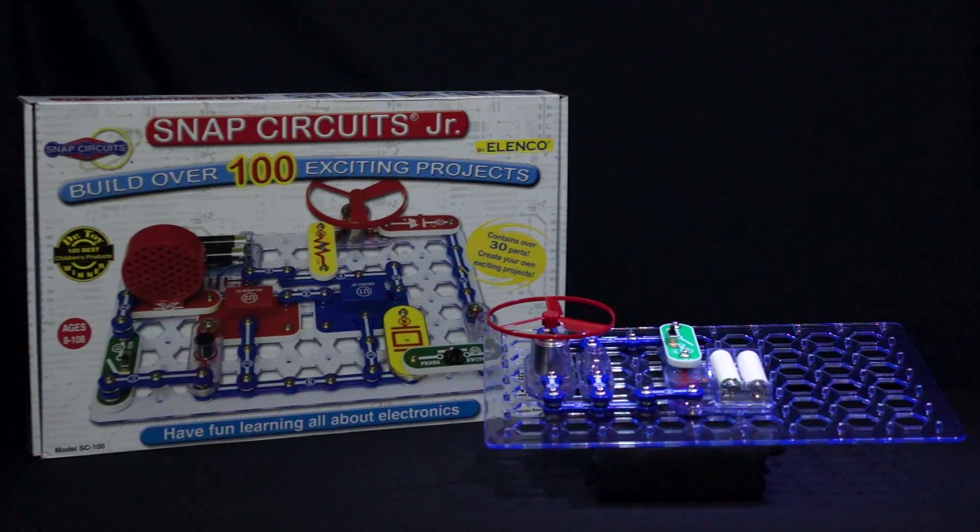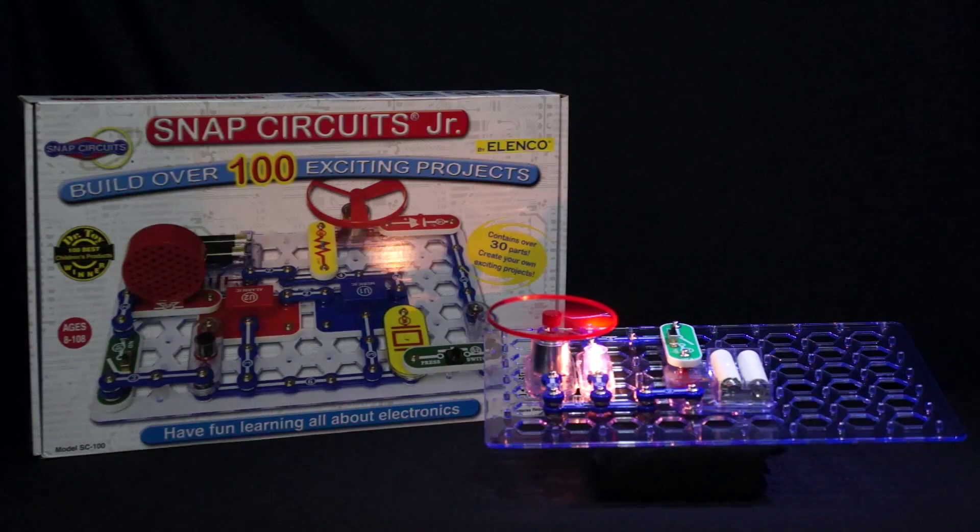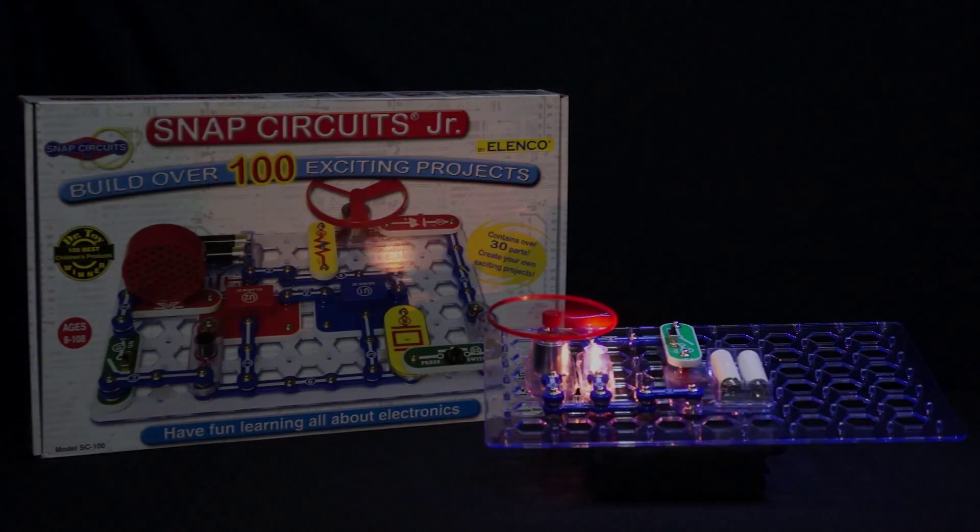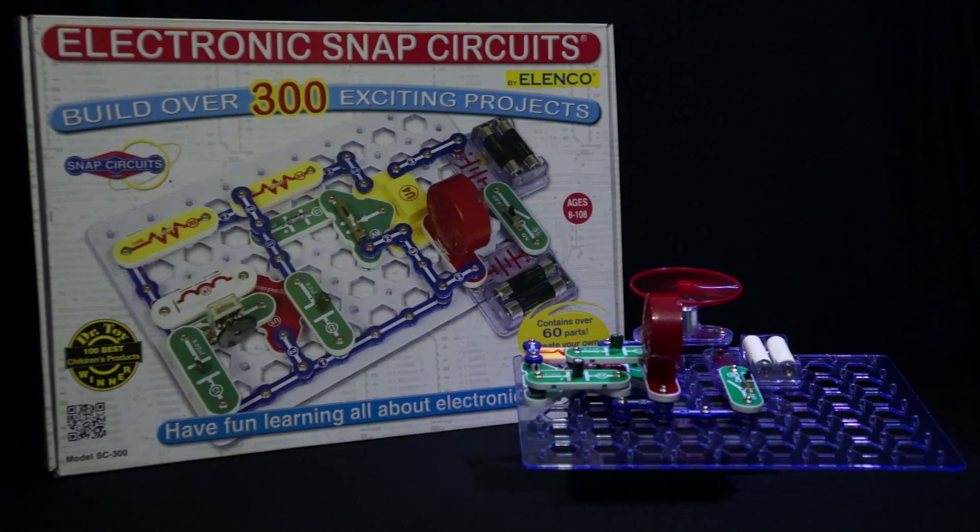Snap Circuits Junior is a great starter set for any age group and is the smaller of the four sets in the series. This set comes with over 100 projects and 30 parts. Snap Circuits Deluxe is the next set in the series. It offers over 300 projects and contains over 60 parts.